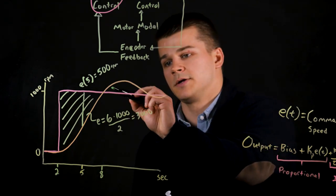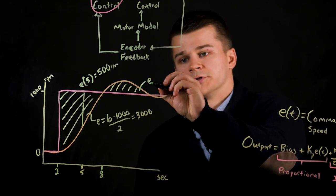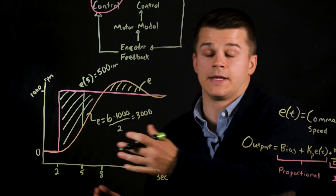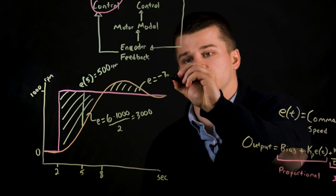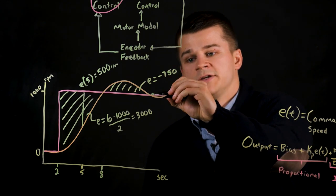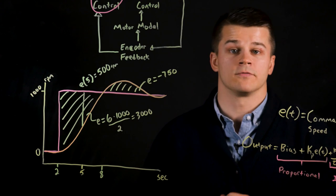We would do the same thing up here to calculate the error. Your error would actually be negative. So if we just roughly ballpark that this is say a quarter of the size of that area, your error will equal negative 750. So at this point in time your error would be 300 minus 750 for your integral term.